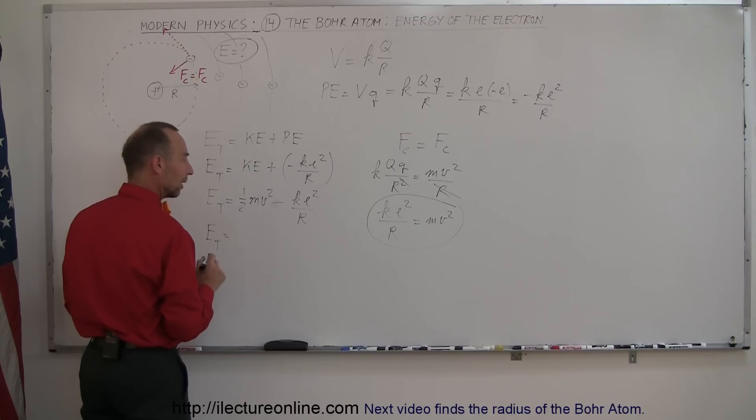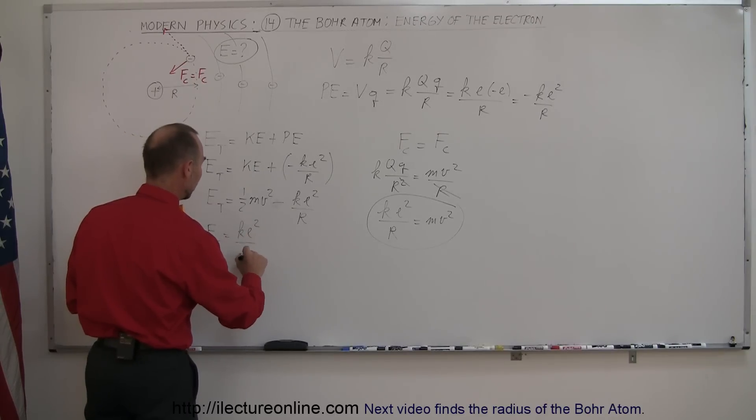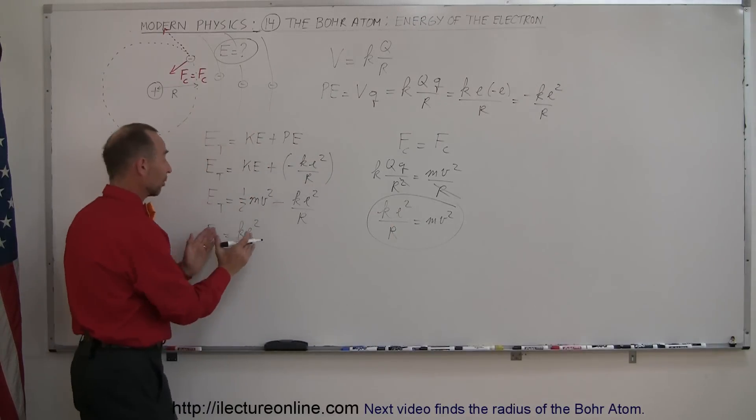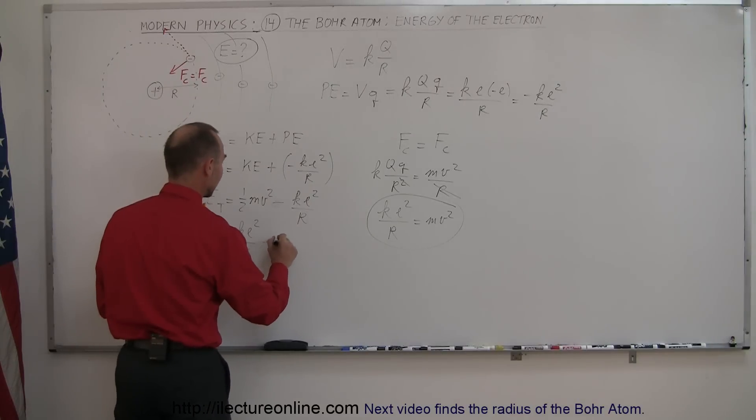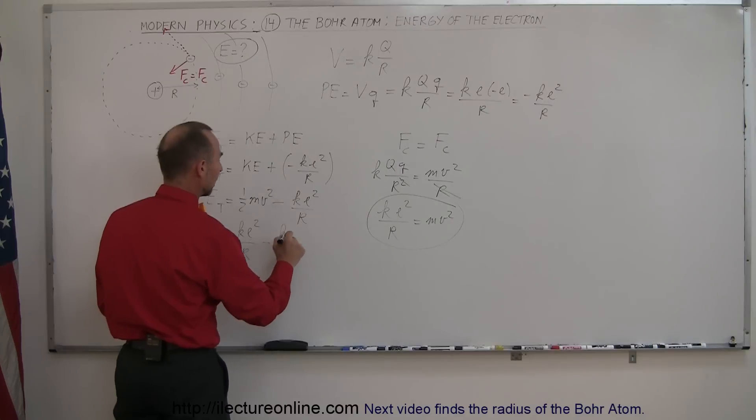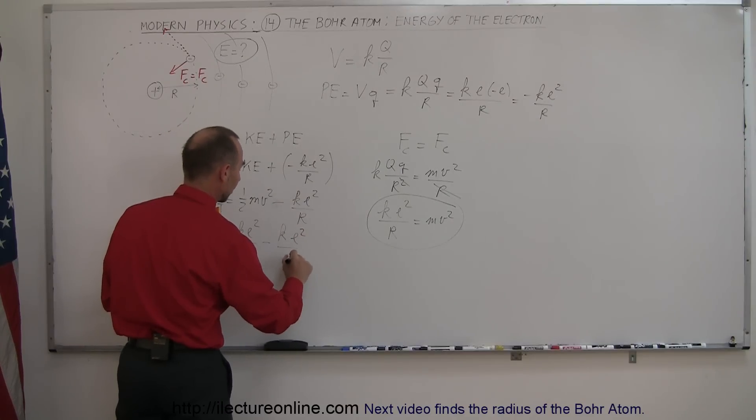So the total energy of the electron in orbit around the proton is equal to Ke² over R. The reason I made this positive not negative is because the kinetic energy can only be positive, can never be negative. So ½ times Ke² over R minus Ke² over R.